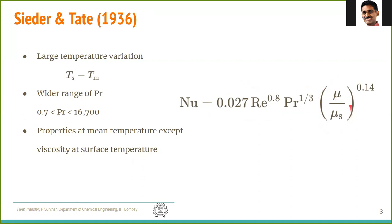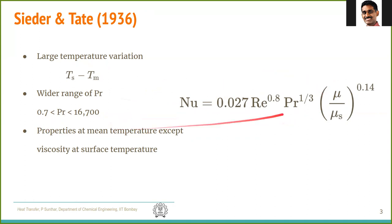However, there is an additional factor for the ratio of viscosities. This is used when there is a large temperature variation between the surface and the mean temperature — if viscosity also changes significantly, you must use this viscosity ratio for the Nusselt number. Sieder-Tate is also applicable for a wider range of Prandtl number, about 100 times larger than the 160 limit of Dittus-Boelter. All properties are evaluated at the mean temperature except the surface viscosity, which is evaluated at the surface temperature.